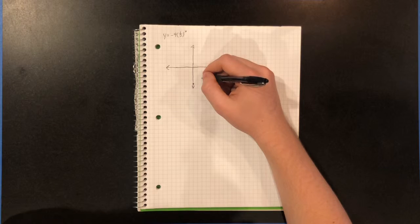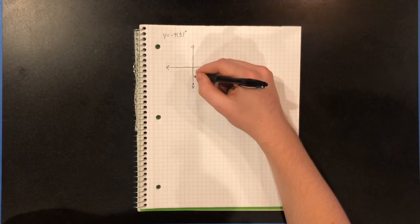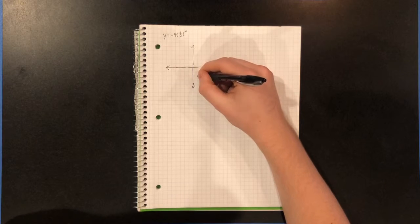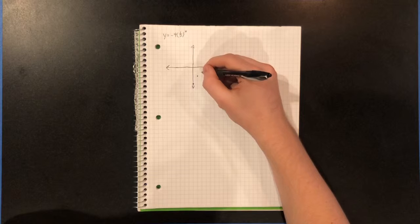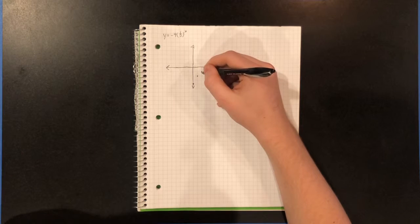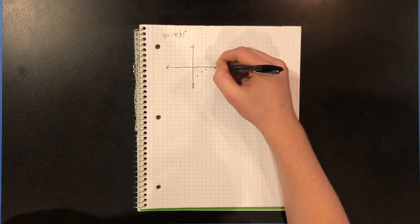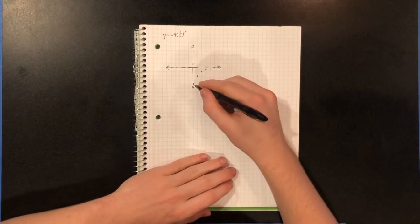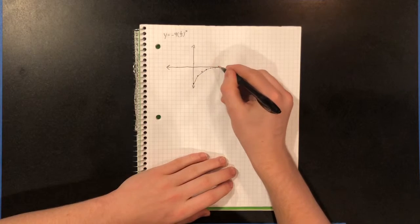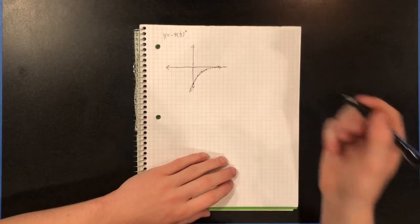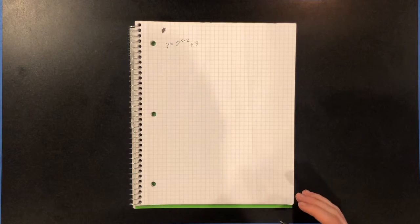So since it's 4 again, we will go down 2 over 1 from here. And then down 1 over 1. And then down a half over 1. And then so on. And it gives us this nice curve. There you go. Another one for you.